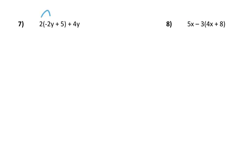Number seven, I'm going to distribute. So I'm going to have negative 4y plus 10 plus 4y. So the negative 4y plus 4y, they're gone, and I'm just left with 10.